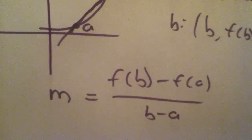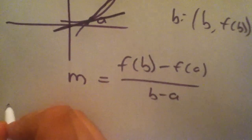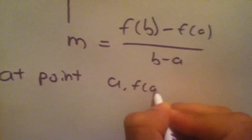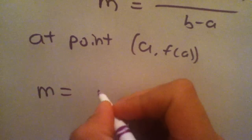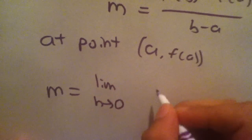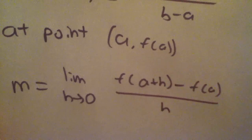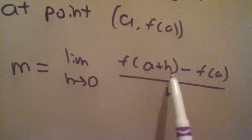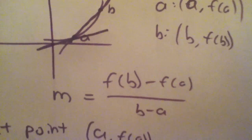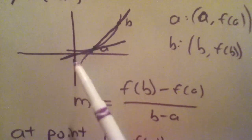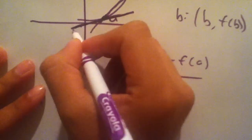If I wanted to find the slope at only one point of this graph — say the tangent line at point a, f of a — the formula you can use is m equals the limit as h approaches 0 of f of a plus h minus f of a over h. Since h is approaching 0, you're adding a very small number to the point a, f of a, and from that you can get the slope at that exact point. Visualized, it covers a very small distance, giving you the tangent line.